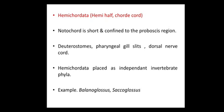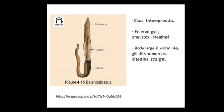We study Hemichordata because it is included in our syllabus. The example is Balanoglossus — we can see the proboscis as the anterior part of the body, followed by the collar and the trunk. Balanoglossus is an example of class Enteropneusta: 'enteron' means gut, 'pneusta' means breath. It is a large worm-like organism with numerous gill slits and a straight intestine.